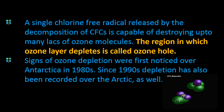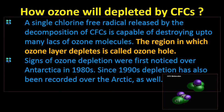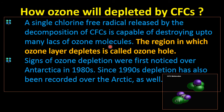A single chlorine free radical from the decomposition of chlorofluorocarbons is capable of destroying up to many hundreds of thousands of ozone molecules. The region in which the ozone layer depletes is called the ozone hole. Signs of ozone depletion were first noticed over Antarctica in the 1980s.